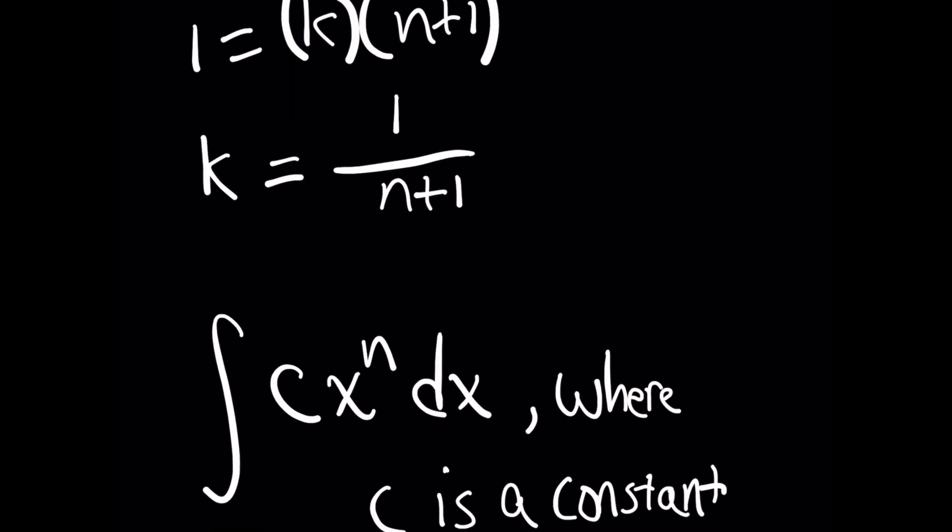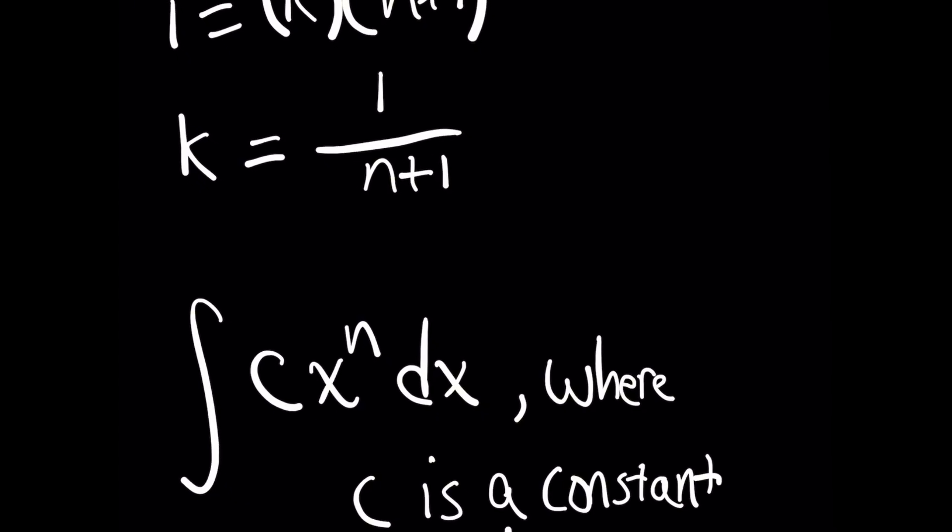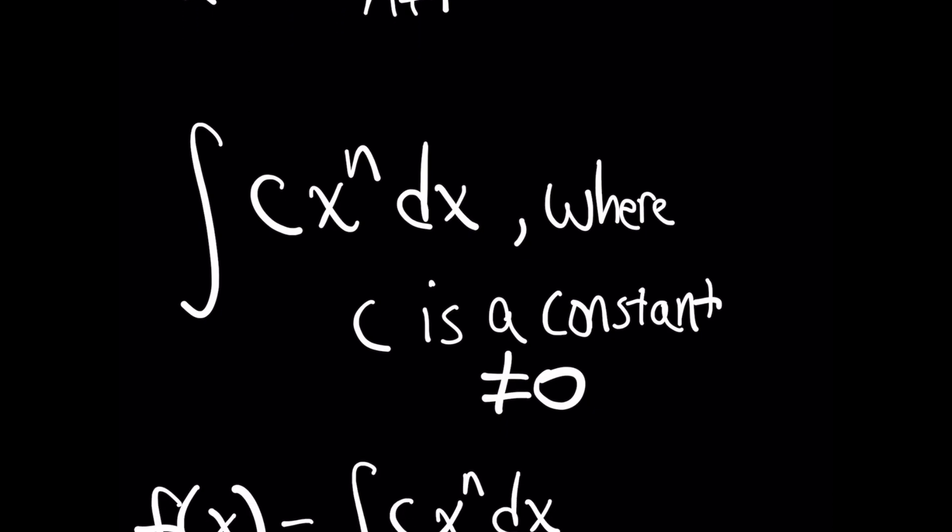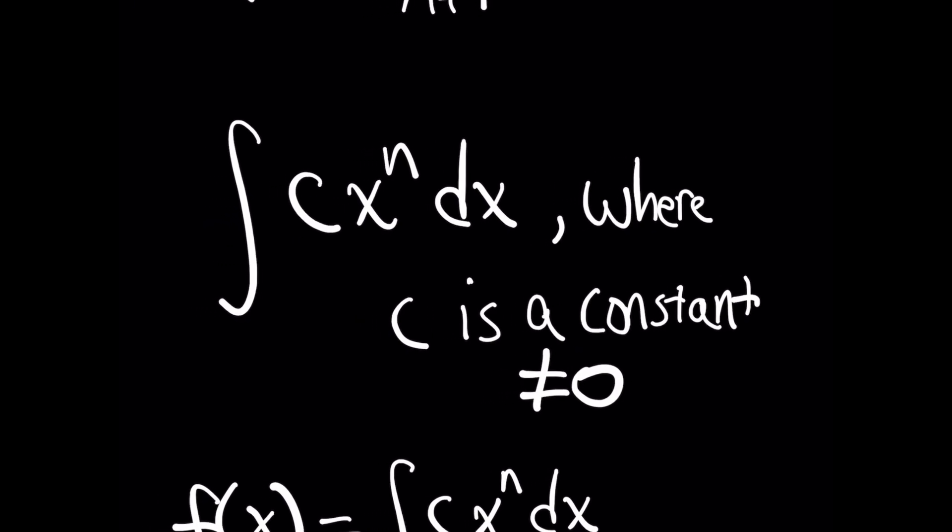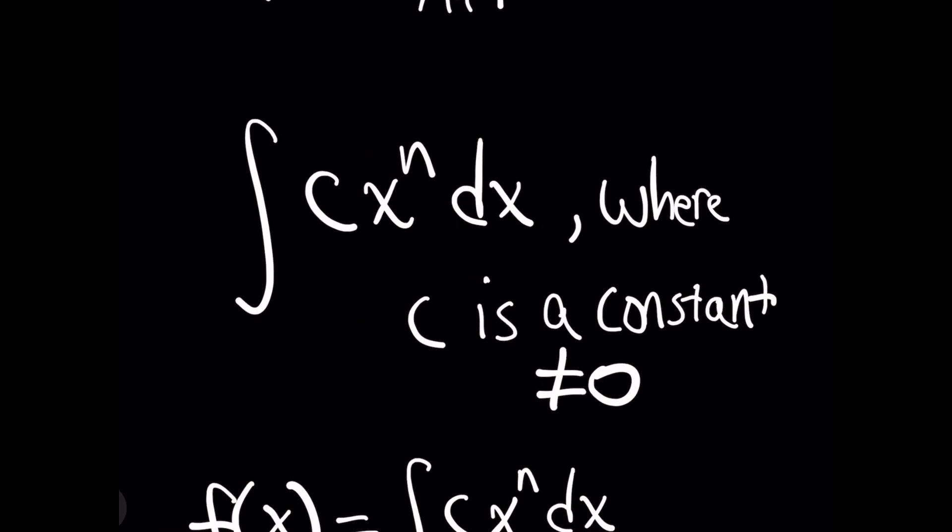The easier integral that we started with above was x to the n. But what if I gave you just any constant c times x to the n, and I told you, you know what, I want you to integrate this ninja style. And I'm going to tell you that in this case, c is anything but zero, right? Based on what we did above, what do you think the answer will be in terms of c and n?